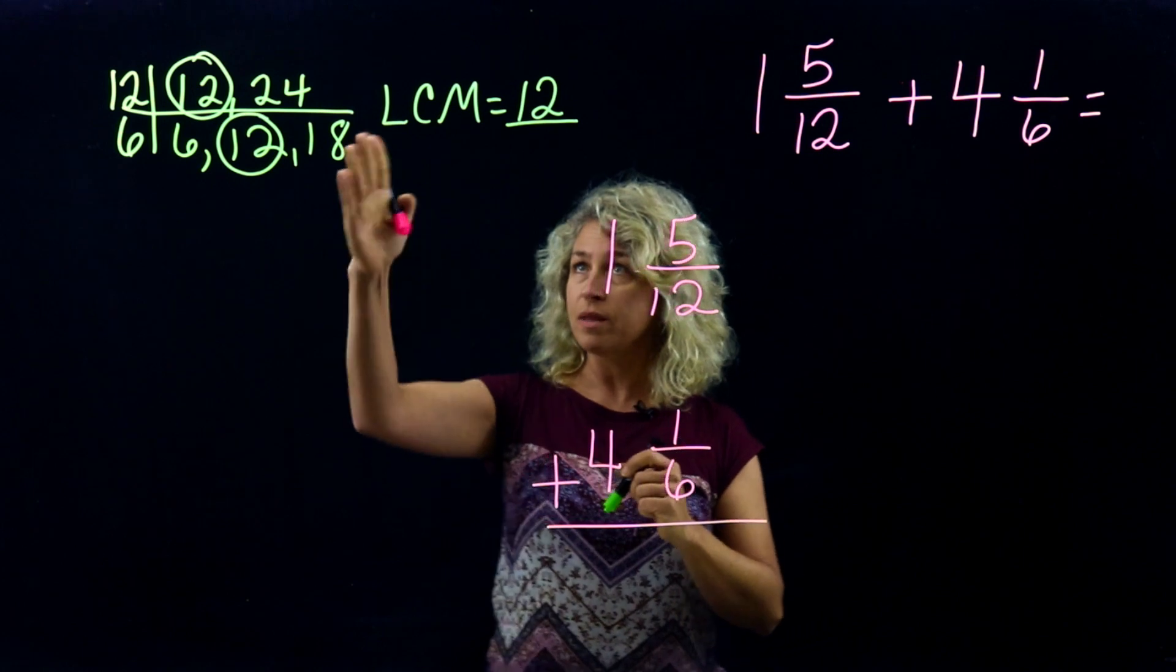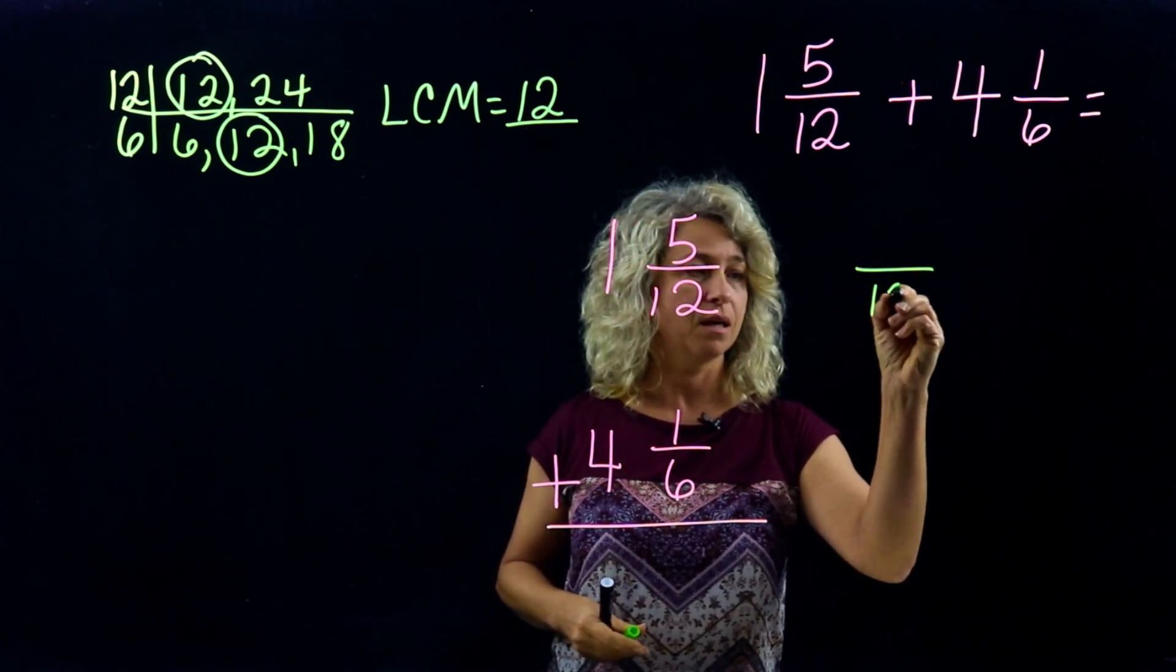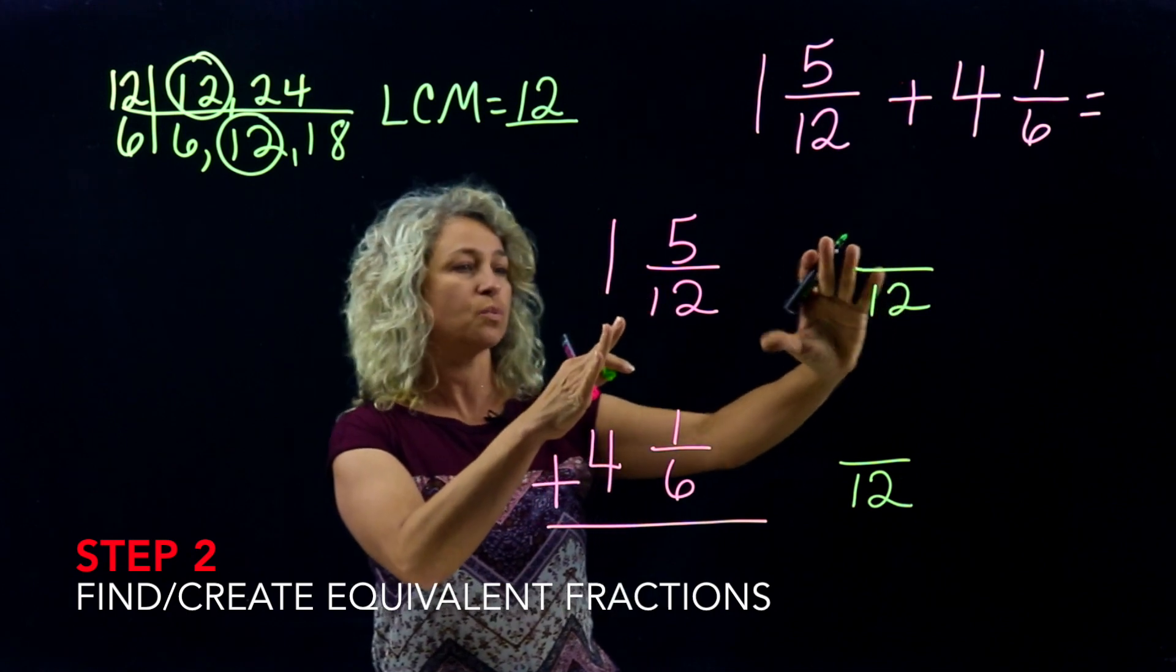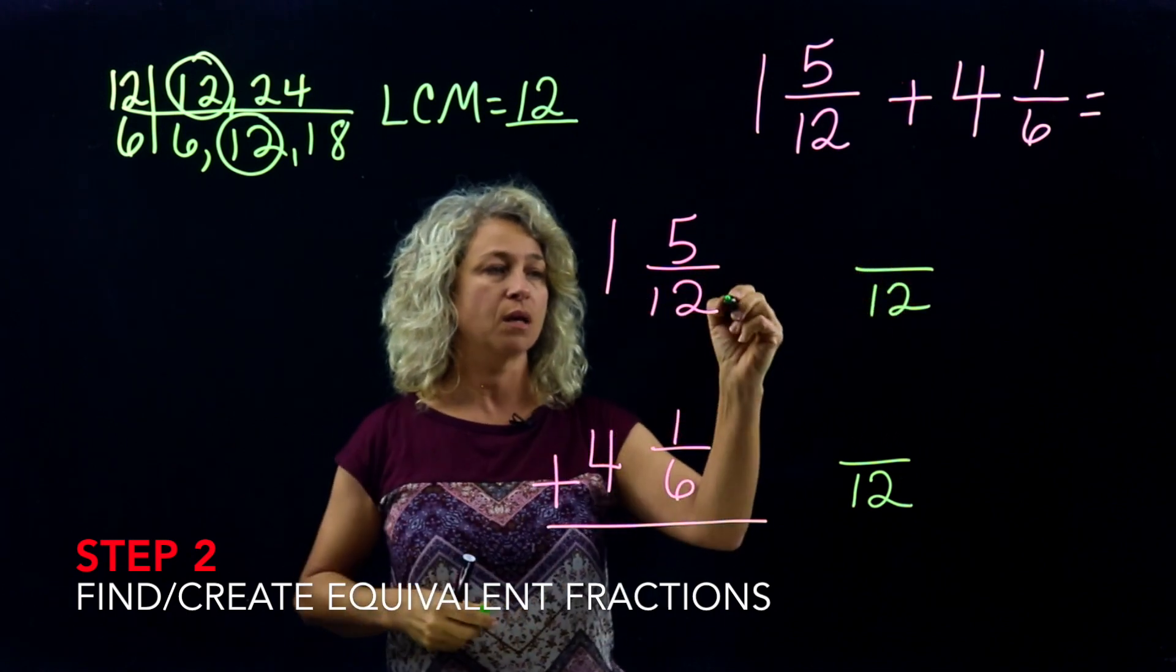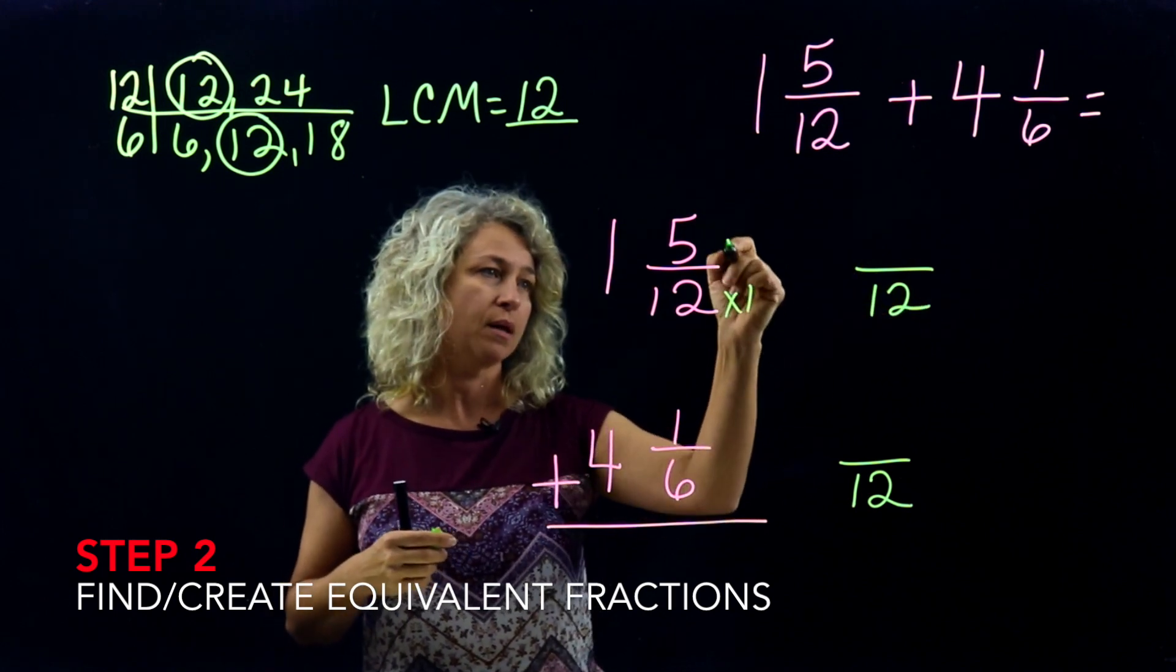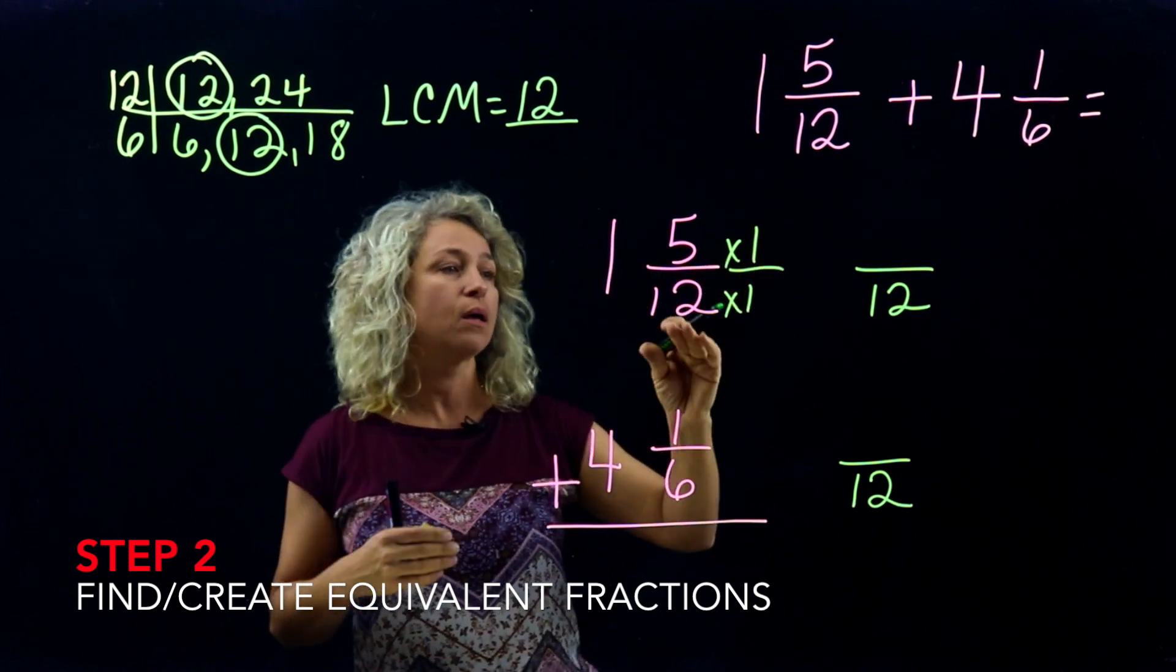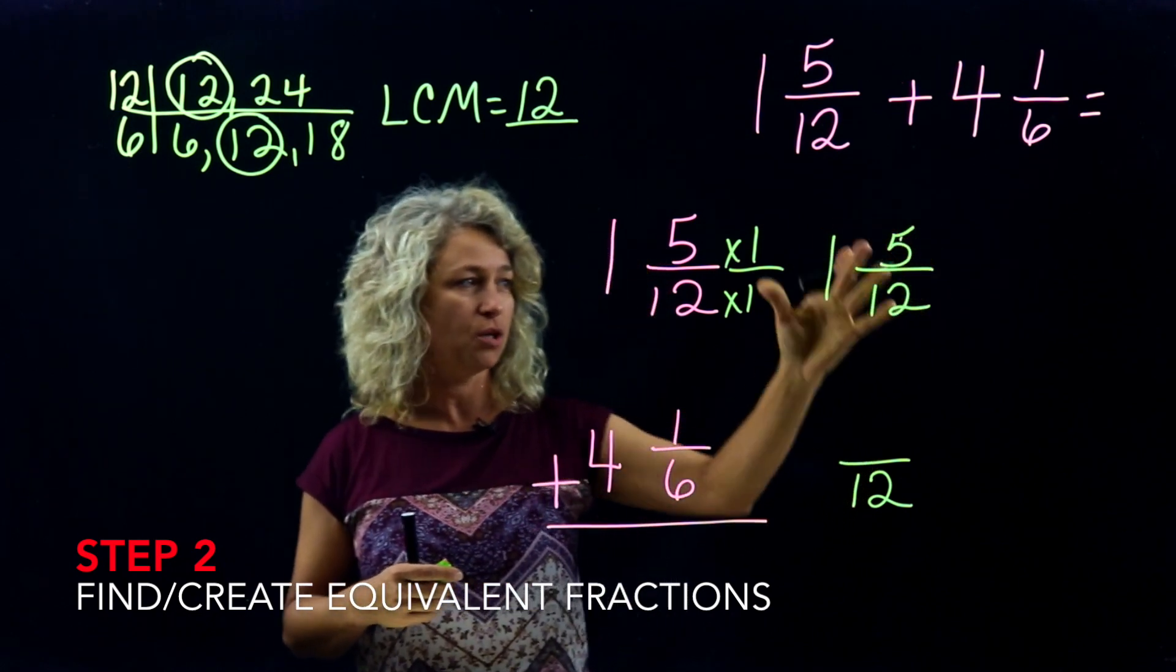Now we know the LCM is 12, so I want to replace the denominators with the number 12. And so when I look at this first one, well this is already a 12, right? So that's an easy one. And how do I get from a 12 to a 12? Times 1. Now I can list this times 1, times 1, but there's really no point. You can just copy this over, 1 and 5/12, and you don't have to do anything to this one.